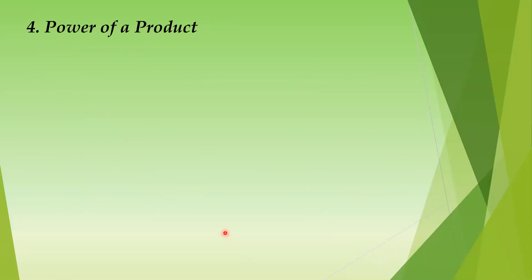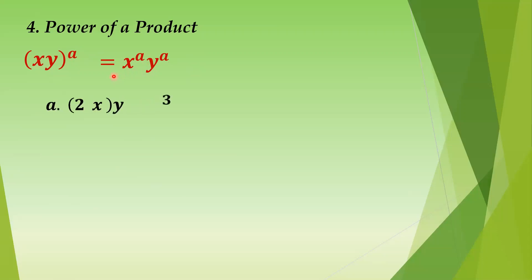Next: we have power of a product. We have the product xy raised to a. What you do is distribute the exponent: x raised to a times y raised to a. That is called power of a product. Example: the quantity 2xy raised to 3 — distribute: 2 cubed times x cubed times y cubed. Since 2 cubed is 2 times 2 times 2, we get 8x cubed y cubed.